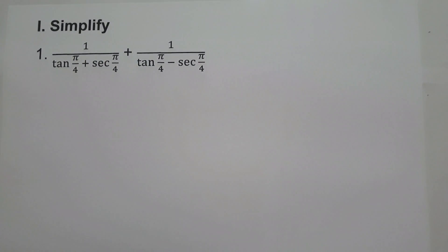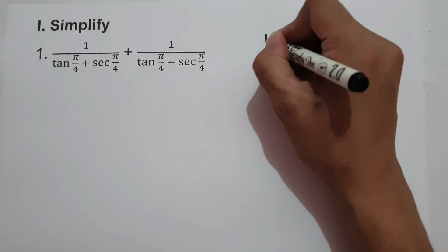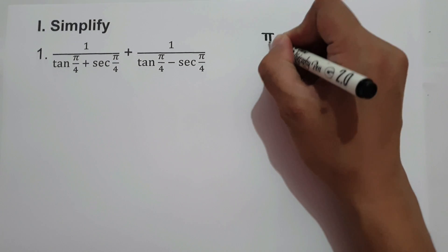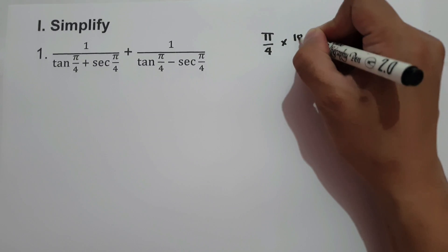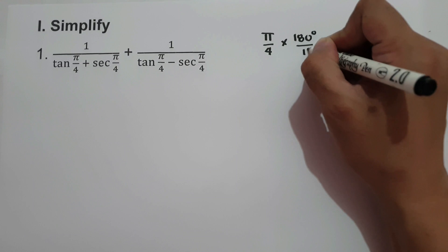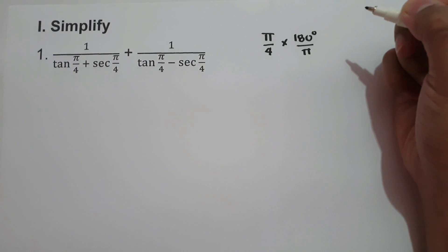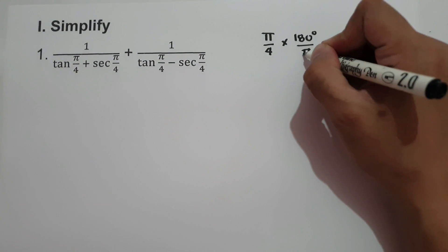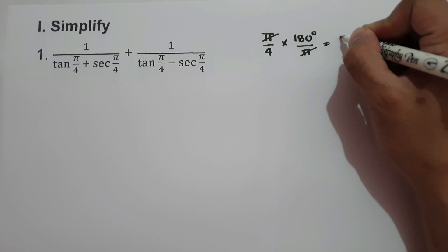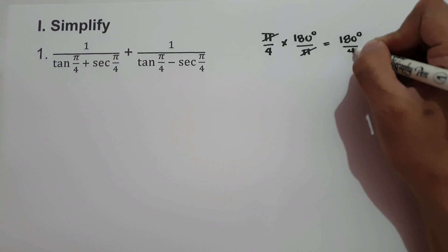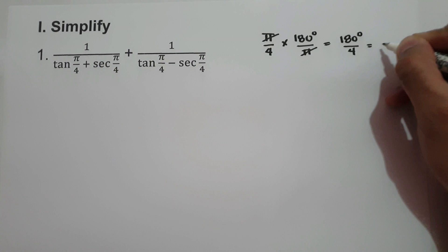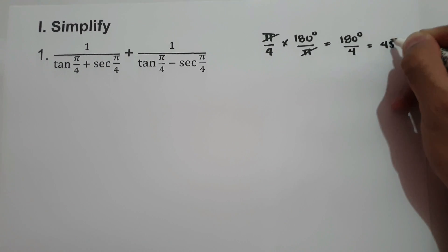In order for us to simplify the given expression, let us convert the given radians to degrees. That is π/4 — we multiply by 180 degrees over π to convert. We cancel π and we have 180 degrees over 4, which is 45 degrees.